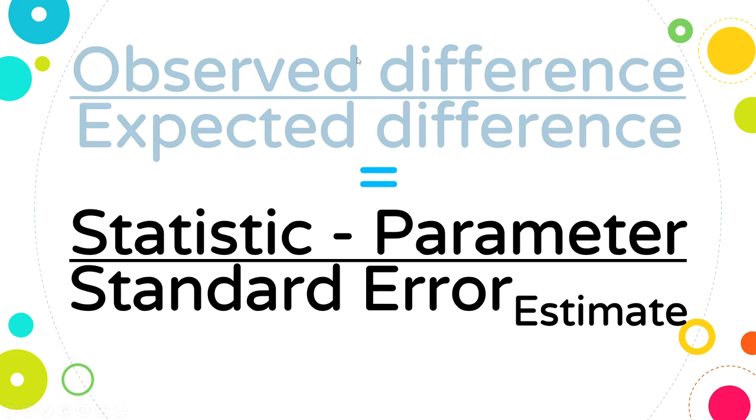And so it's a signal to noise ratio. The numerator is what's the signal I got in my data? What's the difference I actually observed? The denominator is, what's the noise in the data? That is how variable are things and what kind of differences could you get just by chance?